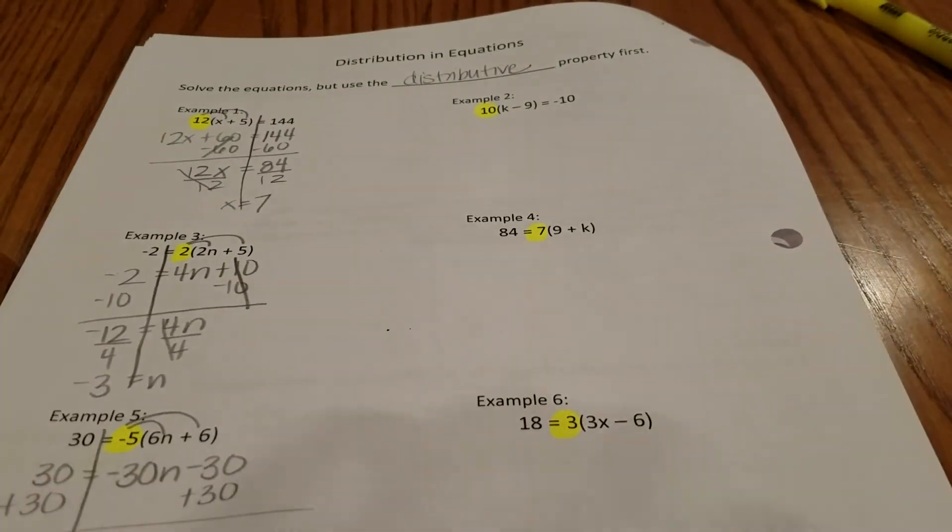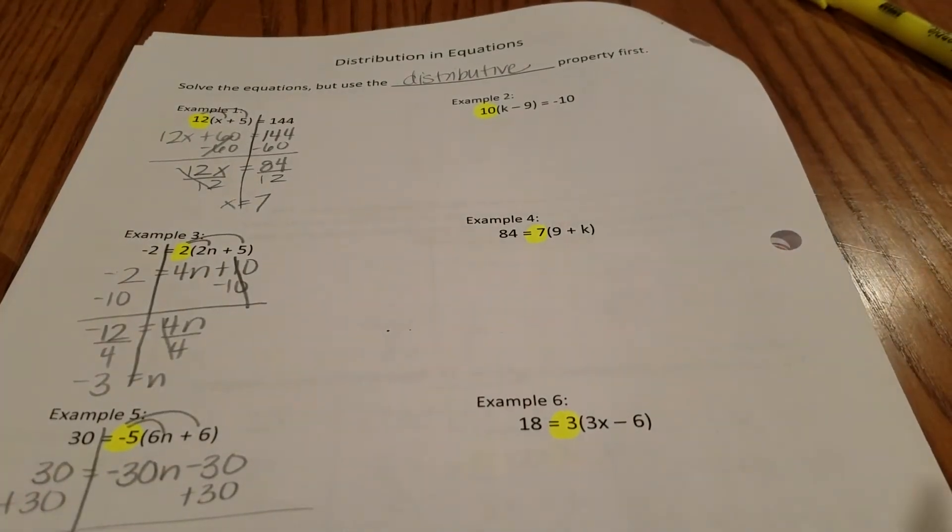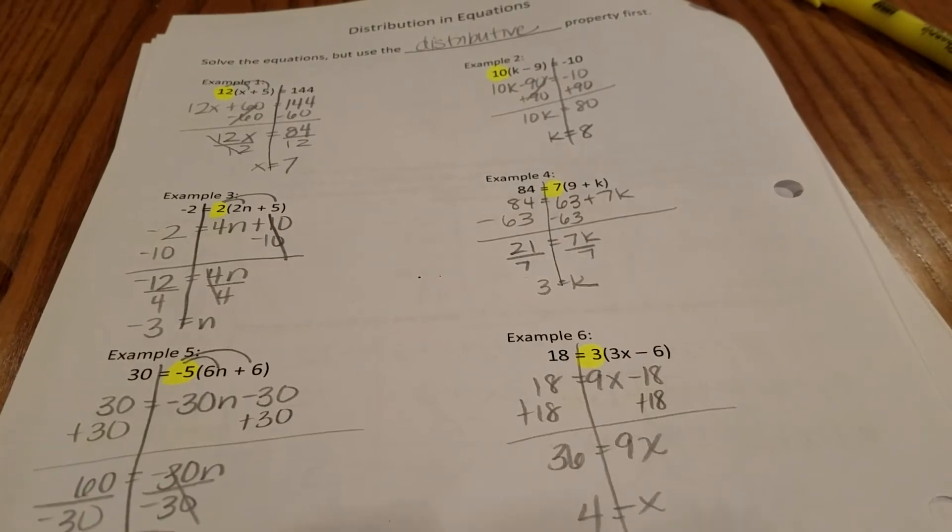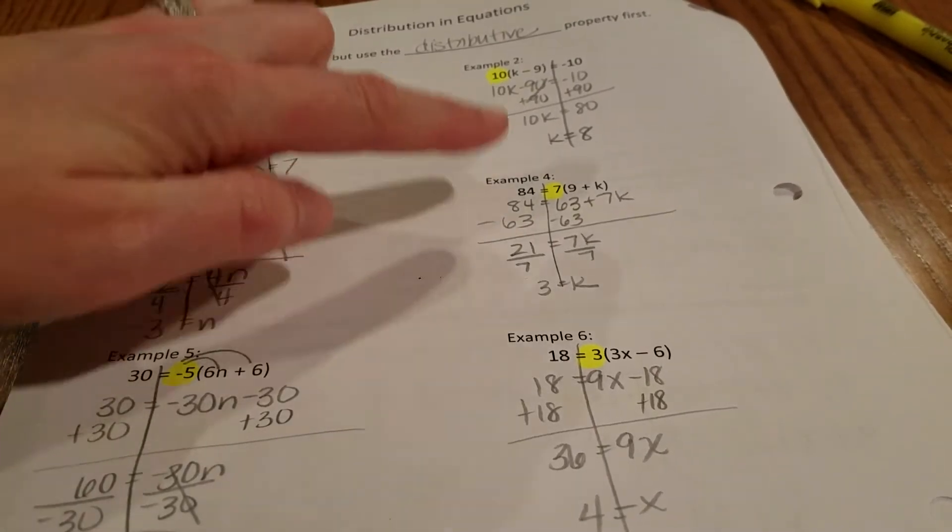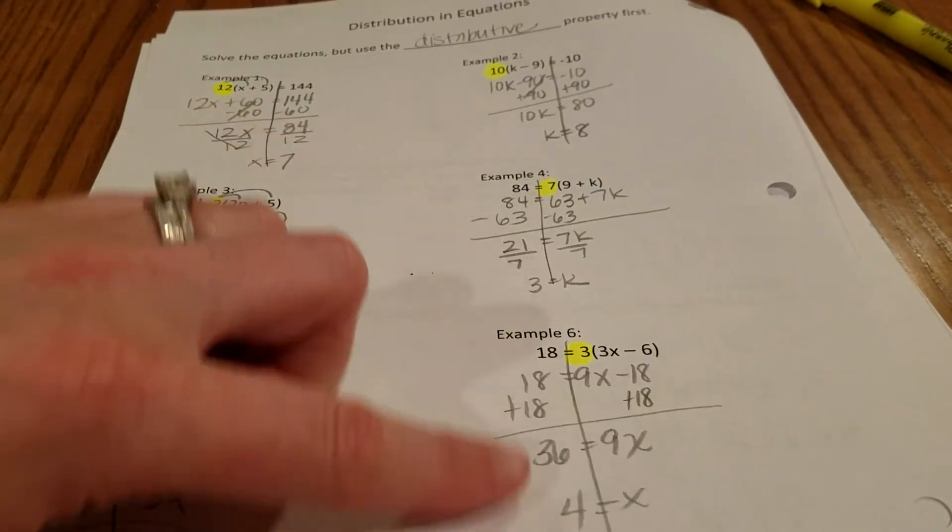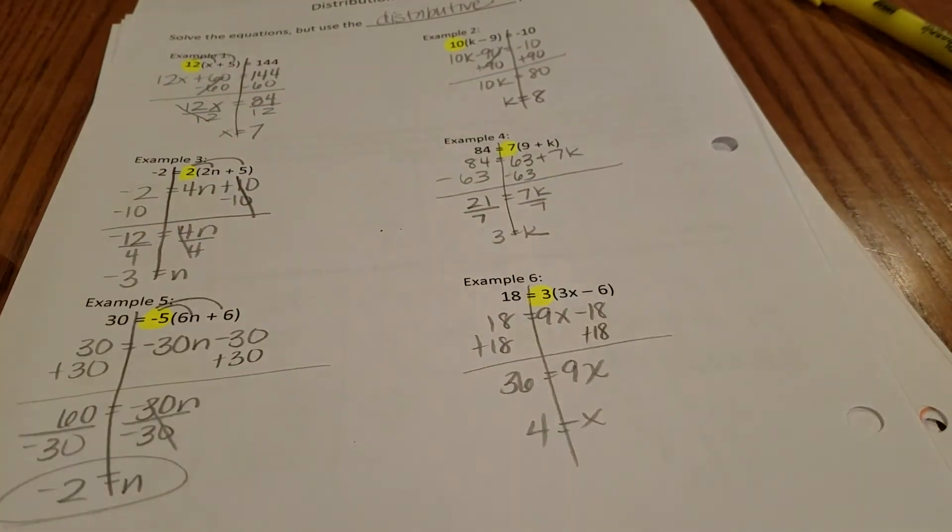So pause the video, and when you come back you can check your answers to these other ones. Alright, there you go. First one, k equals 8 up top here. 3 equals k, and the last one, 4 equals x.